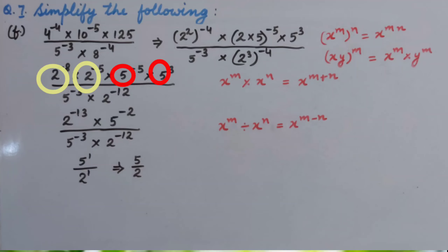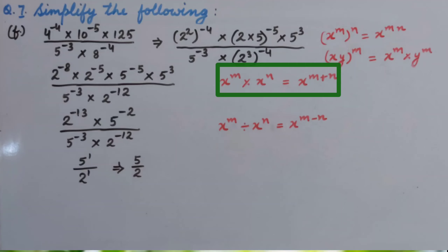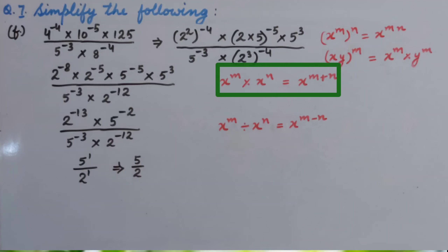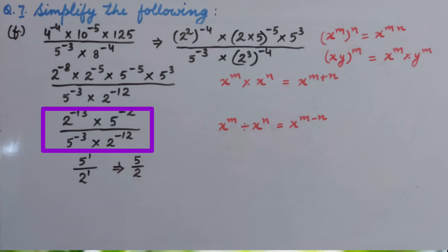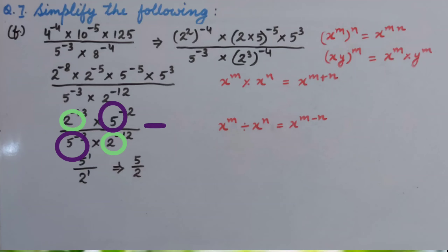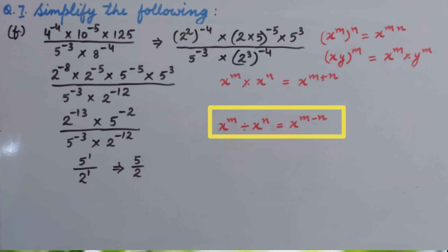Same bases and multiplication. So we use the law: X raised to the power M multiplied by X raised to the power N equals X raised to the power M plus N. So we get 2 raised to the power minus 13, multiplied by 5 raised to the power minus 2 upon 5 raised to the power minus 3, multiplied by 2 raised to the power minus 12. Division of same bases, using X raised to the power M divided by X raised to the power N equals X raised to the power M minus N. Hence we get 5 raised to the power 1 upon 2 raised to the power 1. So the answer is 5 upon 2.